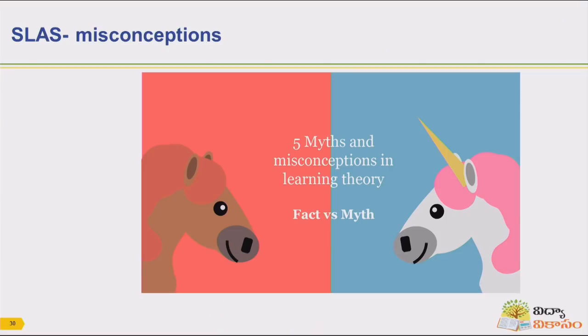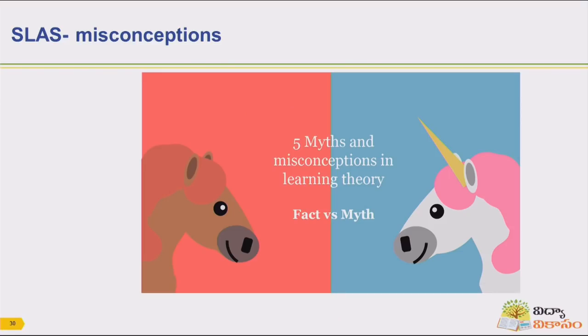I request you to see this slide on misconceptions and answer my question. What is there in that picture? What are you observing? I think it is a horse on the left side, and the other one — what is that? Is it not a horse? But it has a horn, so it is called a unicorn.